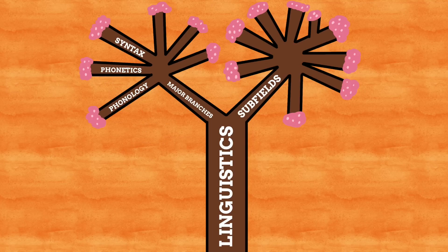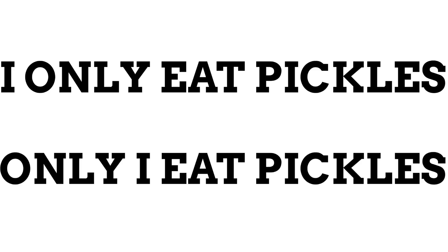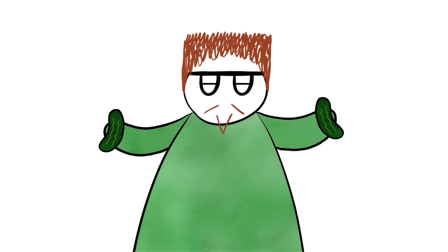The next major branch is something called syntax. Syntax is less about the sounds languages make and more about the structure of language in its written and spoken forms as a whole. Syntax is all about the study of word order in a sentence and understanding that when words are said in different orders, they can change the entire meaning of a phrase. Take the examples of 'I only eat pickles' and 'only I eat pickles' — these two sentences have the exact same words in them, but the order of them changes the sentence's meaning.